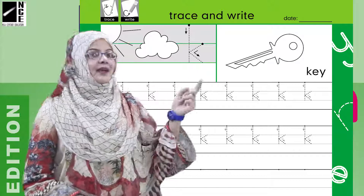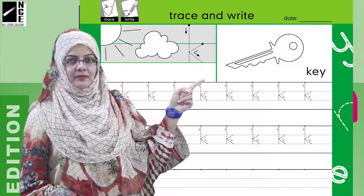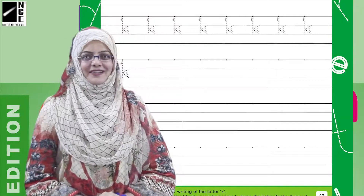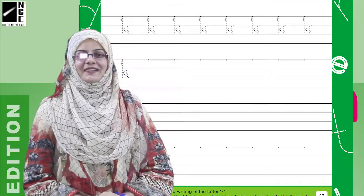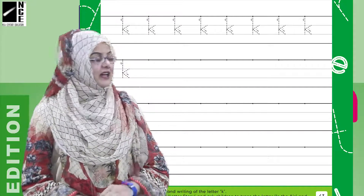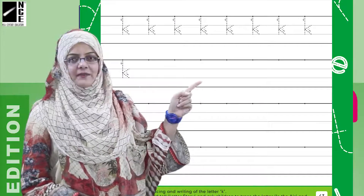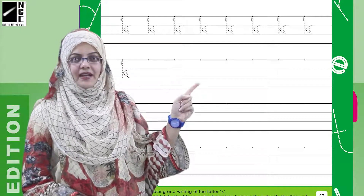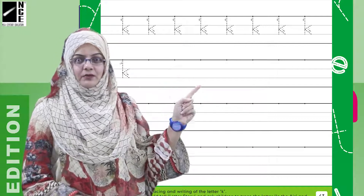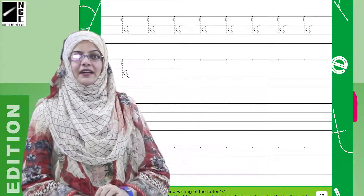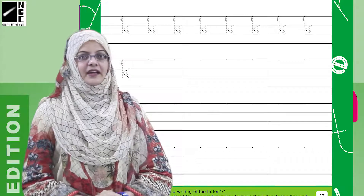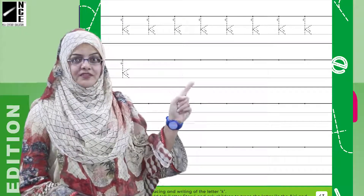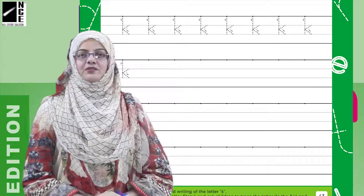Tracing complete ہونے کے بعد نیچے کچھ empty lines بھی دی گئی ہیں۔ بچوں، empty lines کا کیا مطلب ہے؟ ماشاءاللہ، سارے بچے بہت سمجھدار ہیں — ان خالی lines کے اندر ہم نے letter 'kh' کو neatly لکھنا ہے۔ یہ independent writing ہے، یعنی self writing — خود سے سارے 'kh' لکھنے ہیں۔